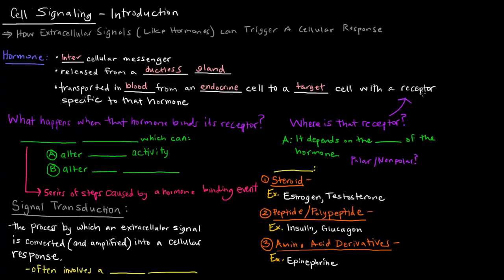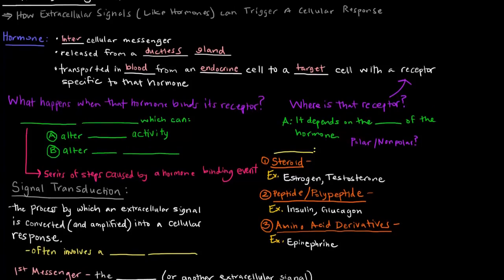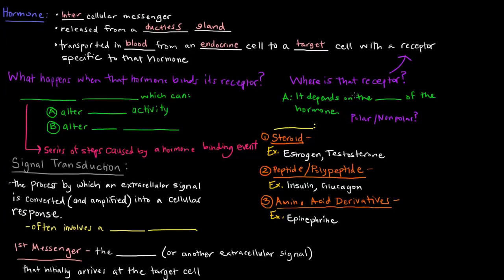So now, where is this receptor? The cell has a receptor, but where is that receptor? Well, to answer that question, we have to think about what hormone is actually coming over to bind. We have to think about the class of that hormone.